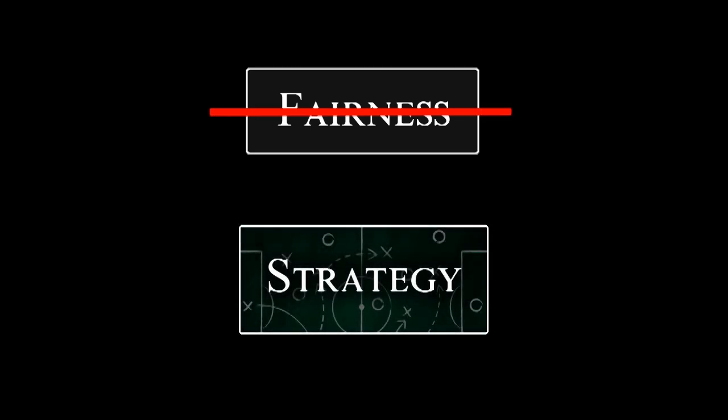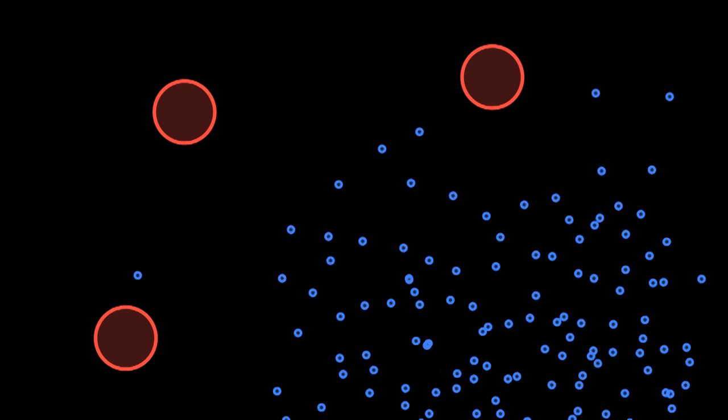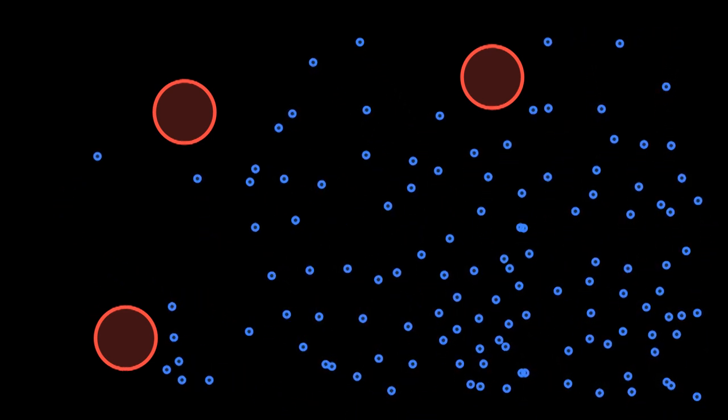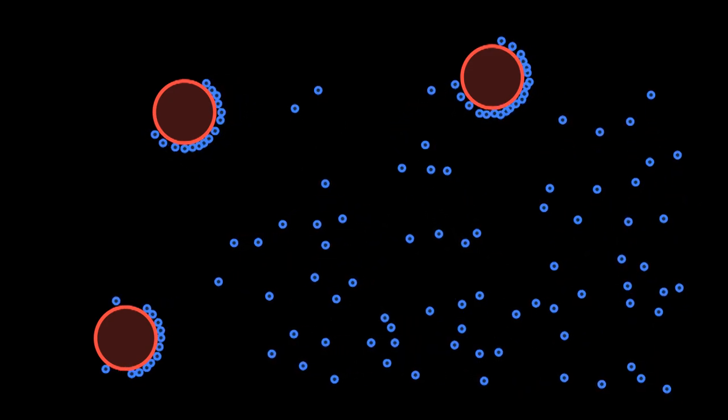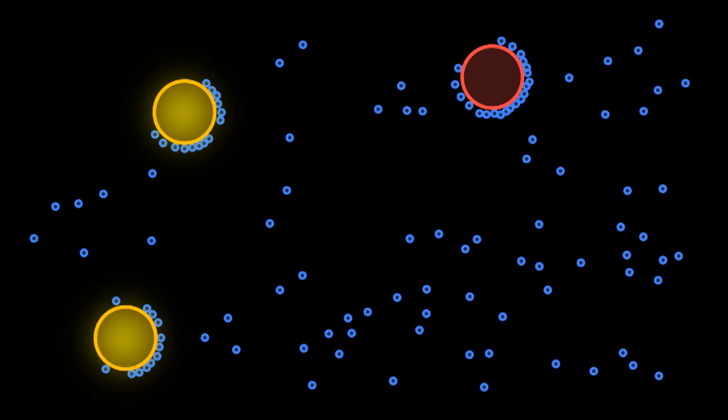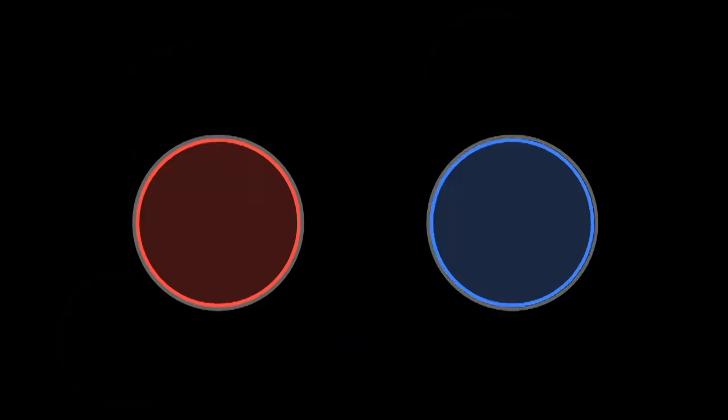Instead of thinking about fairness, think about different competing strategies. One strategy is to make a few large gametes. Another strategy is to make many small gametes and have them find the large gametes. This is a good strategy because you can find many partners and reproduce with them. As one gamete gets smaller, the other is inclined to grow bigger. If it's not big enough, the offspring may not survive. Going halfway is not good enough. You risk losing everything. Bigger is better.